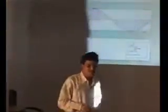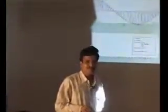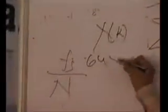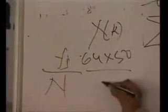What is your sampling frequency you have chosen? 64 into 50. How many points are you taking in the analyzing window? 64. So the frequency resolution is sampling frequency divided by number of points. What is your sampling frequency? 64 into 50. Number of points is 64. So your frequency resolution is 50 Hertz.